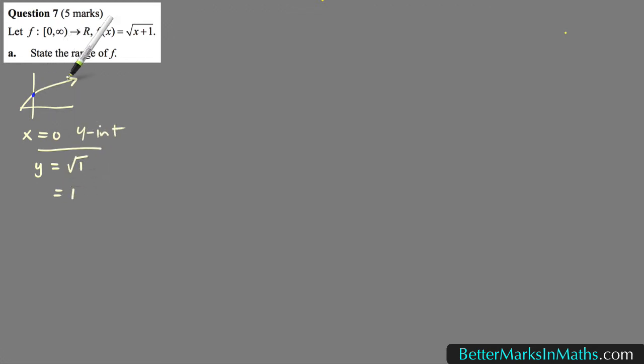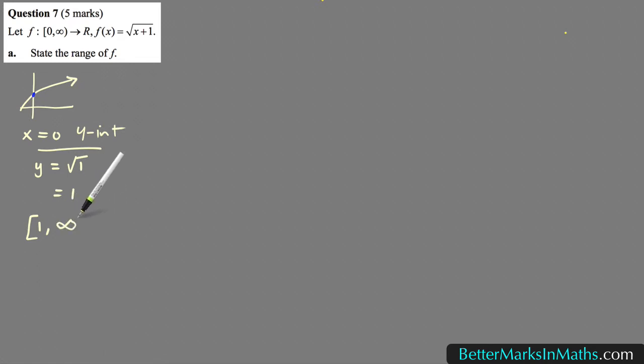From there you can see the range. When x equals 0, that gives the y-intercept. Substituting x equals 0 gives y equal to the square root of 0 plus 1, which is the square root of 1, which is 1. So the lowest y value is 1, and it's included because x equals 0 was included. Substituting positive infinity gives the square root of infinity plus 1, which is still infinity. So the range of f is [1, ∞). That's part a done.